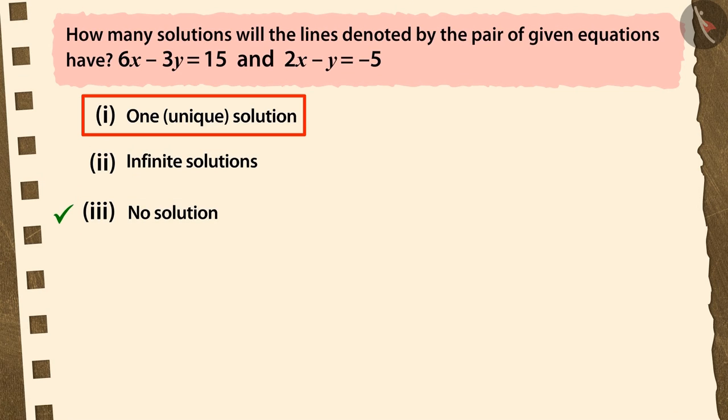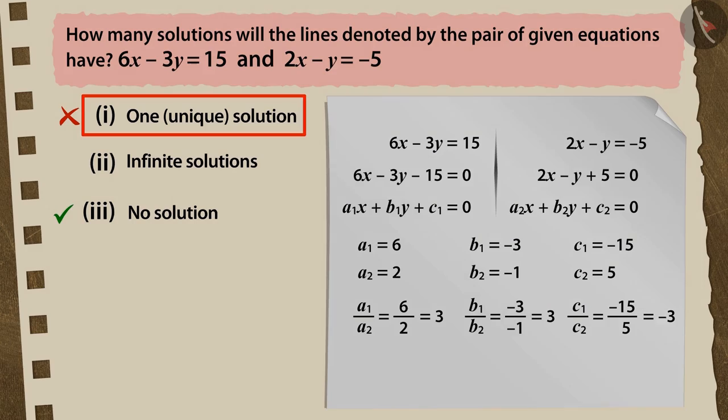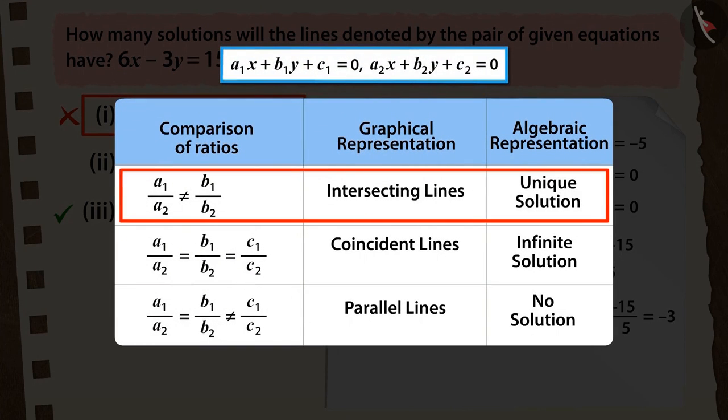If you had chosen option 1, then it's a good try, but this is an incorrect answer. Because in order to have one or a unique solution to a pair of linear equations, the ratio of their coefficients should not be equal.